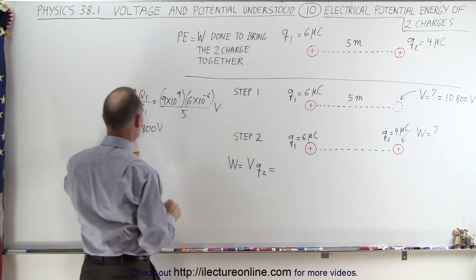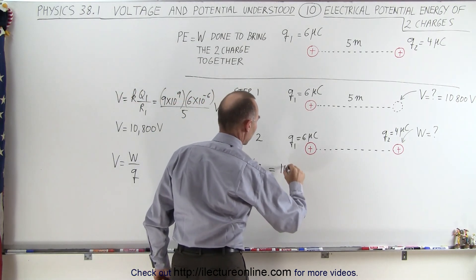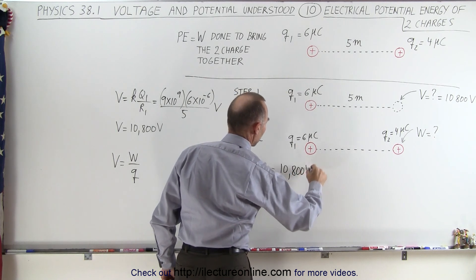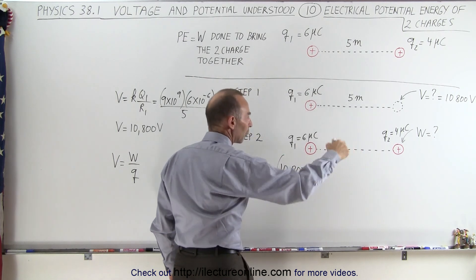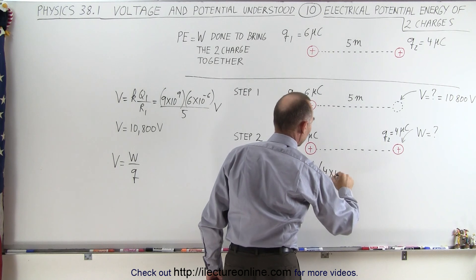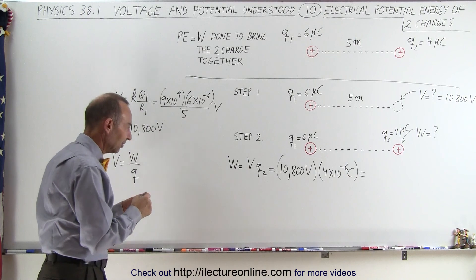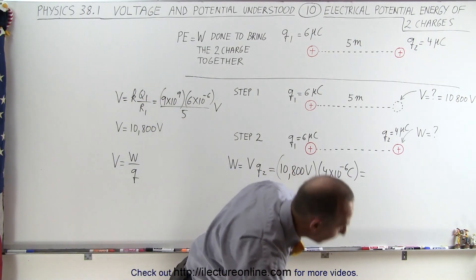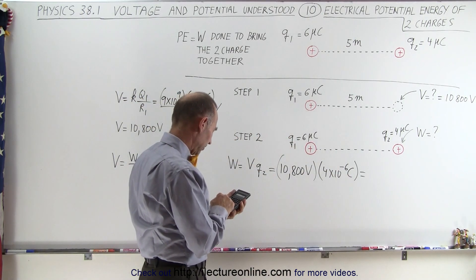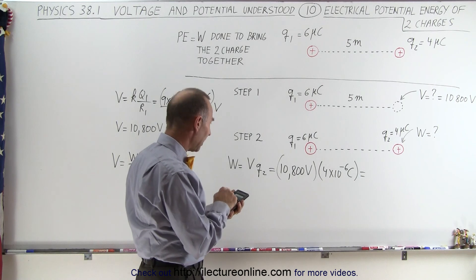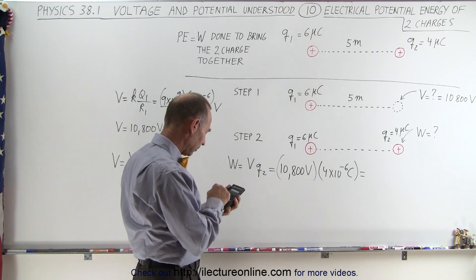the voltage at that location is 10,800 volts, and the charge that we're going to place there is 4 times 10 to the minus 6 coulombs, and coulombs times volts is indeed joules. Now with the calculator we have 10,800 times 4e to the 6 minus,